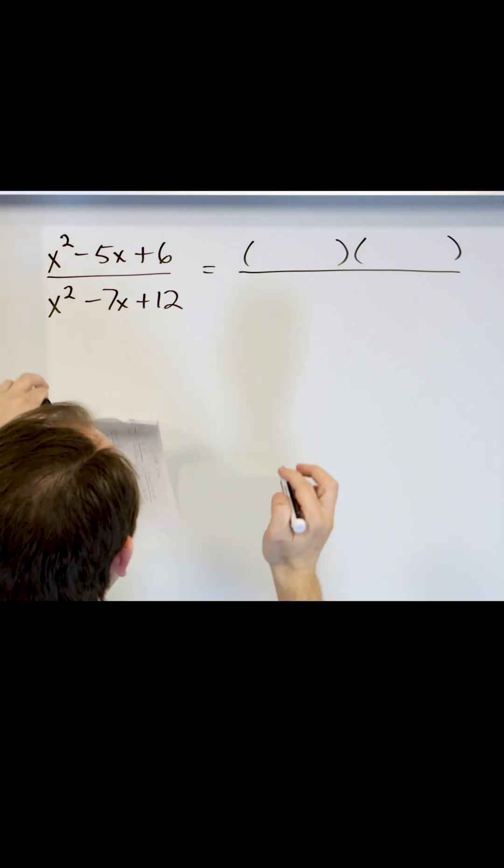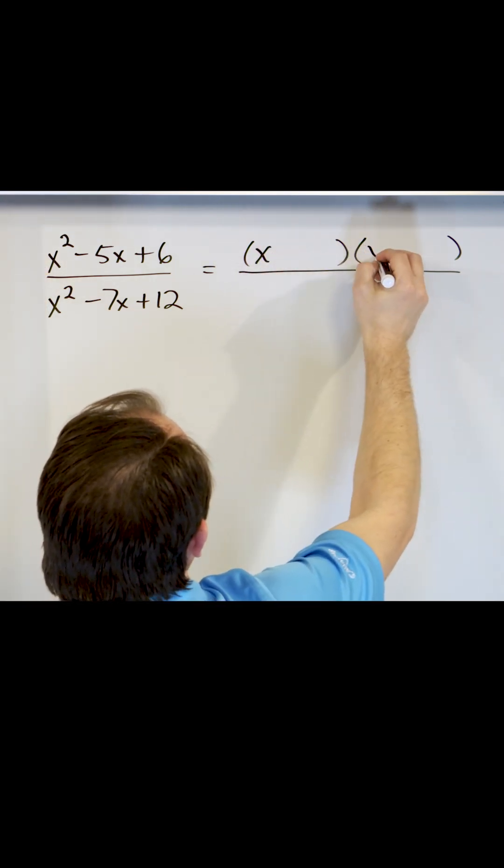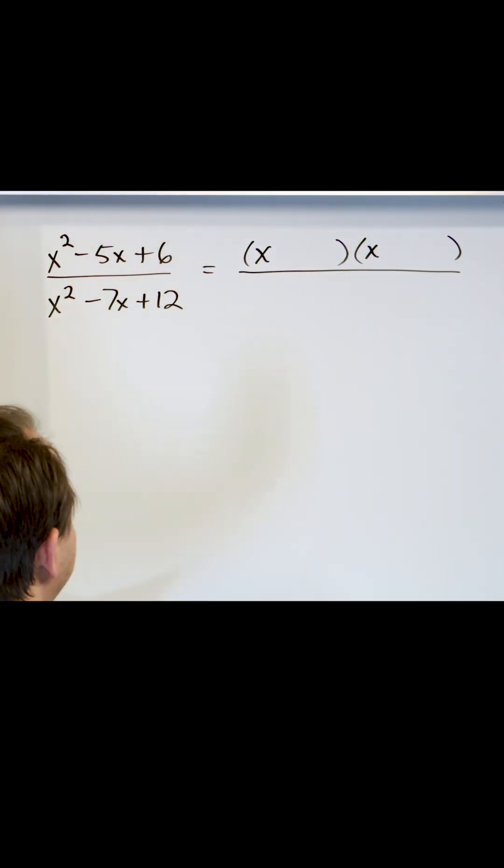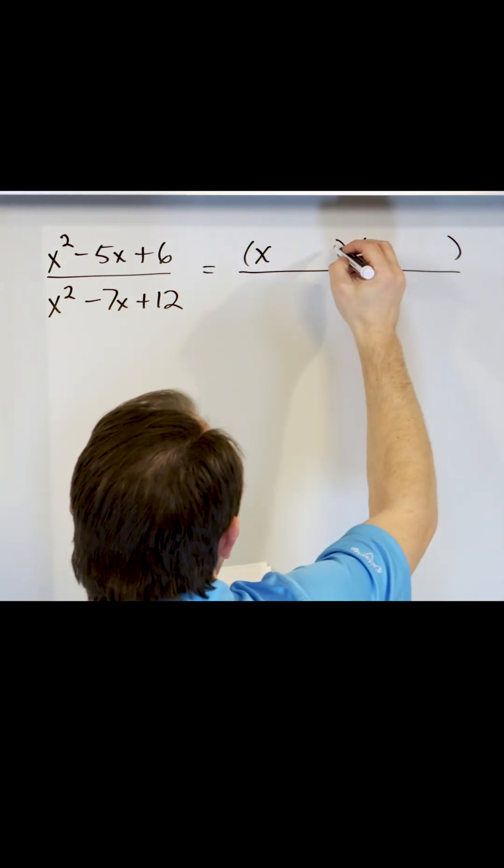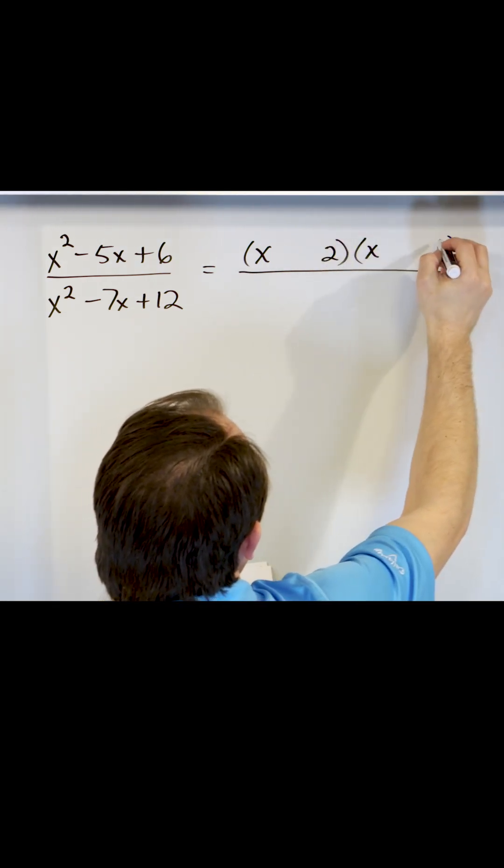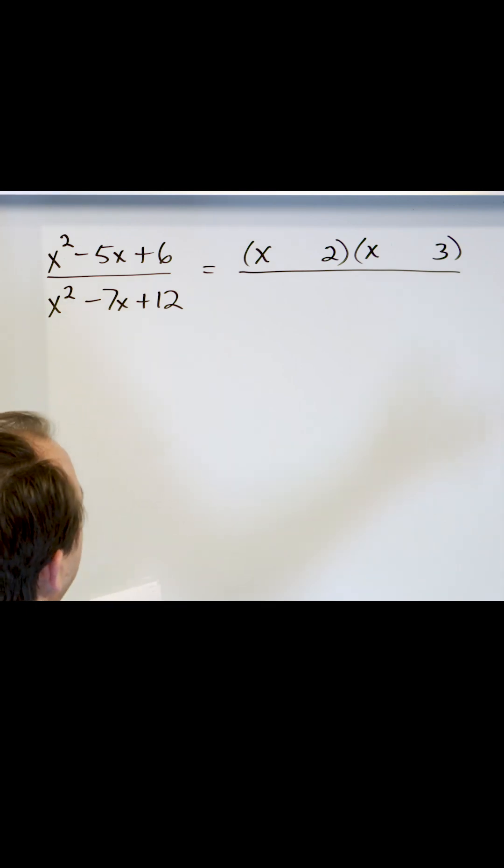So the way we do it is we say we have an x squared term, so it's gotta be an x times an x. And then we have a six. Now we have choices. We can say one times six is six, or we can say two times three is six. So I'm gonna say two times three is six. And then you try to figure out what the signs are. Now the only way that it works is negative times negative.